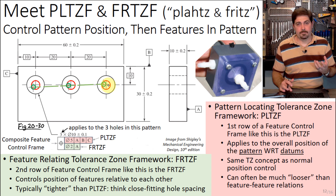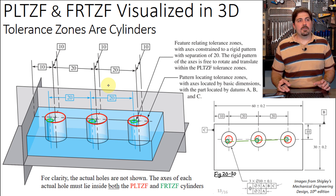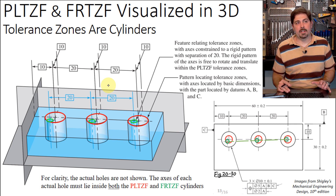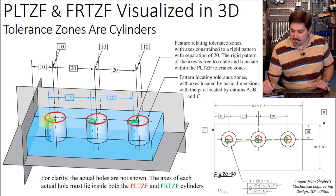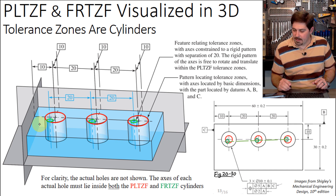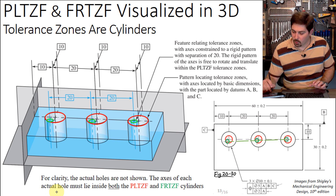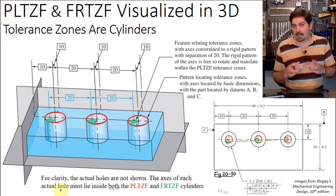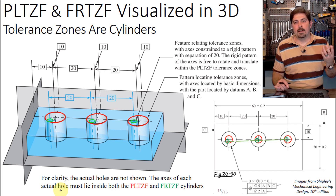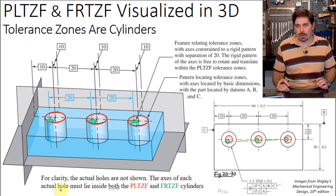In 3D, we're establishing cylindrical tolerance zones — the larger red ones for the PLTZF and the smaller green ones for the FRTZF — and the axes of the actual holes being drilled must lie within both sets of tolerance zones.